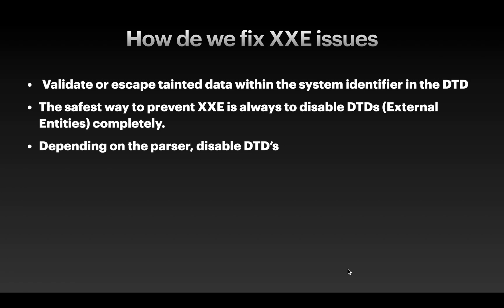How do we fix XXE issues? The first thing is to validate or escape the data within the system identifier in the DTD. Basically, when any input is going to the XML parser, validate or escape the input. The safest way to prevent XXE is to always disable DTDs and external entities completely — do not parse any external entities. Depending on the parser, you can disable DTDs.